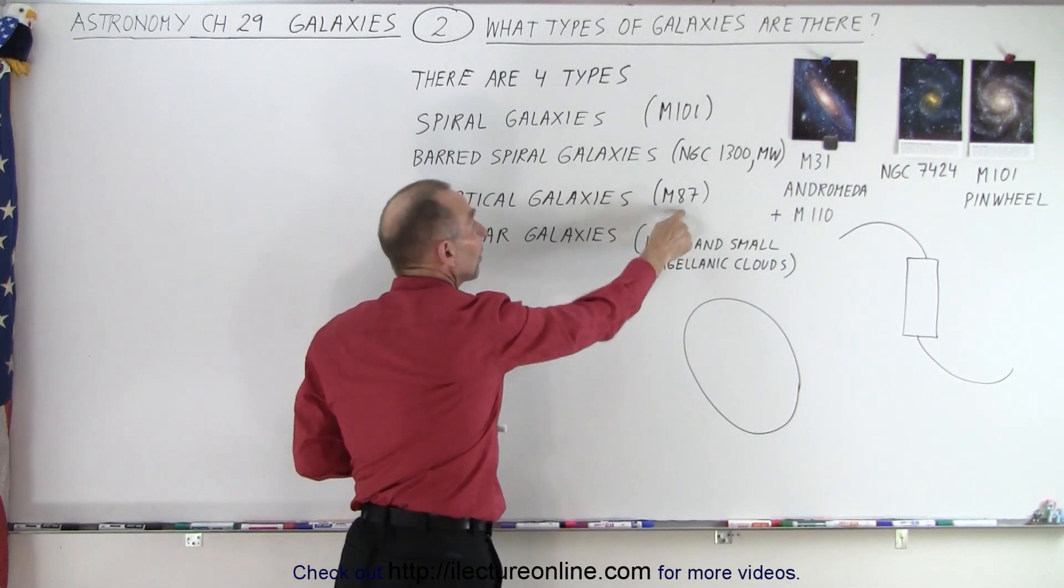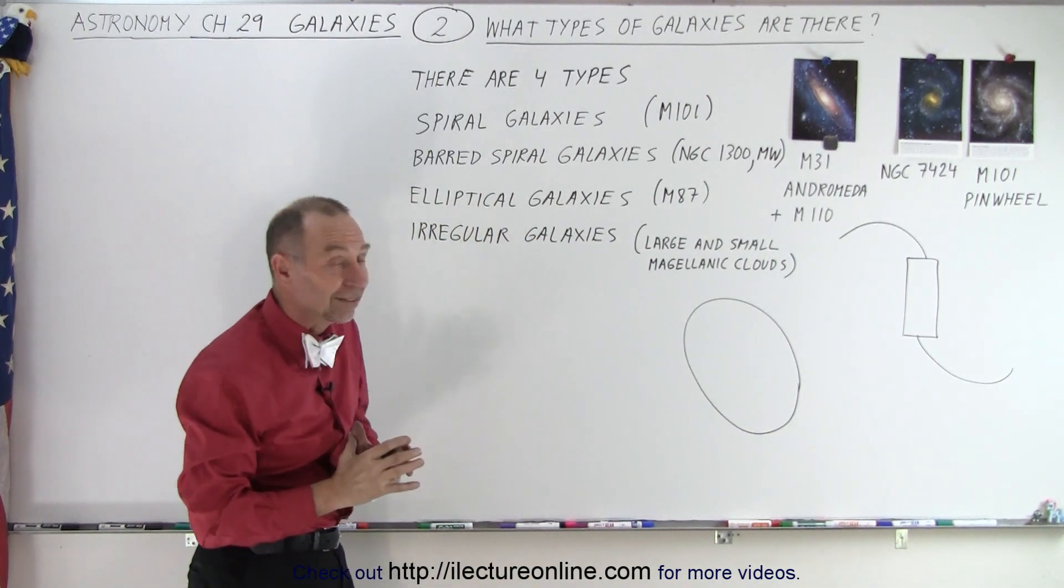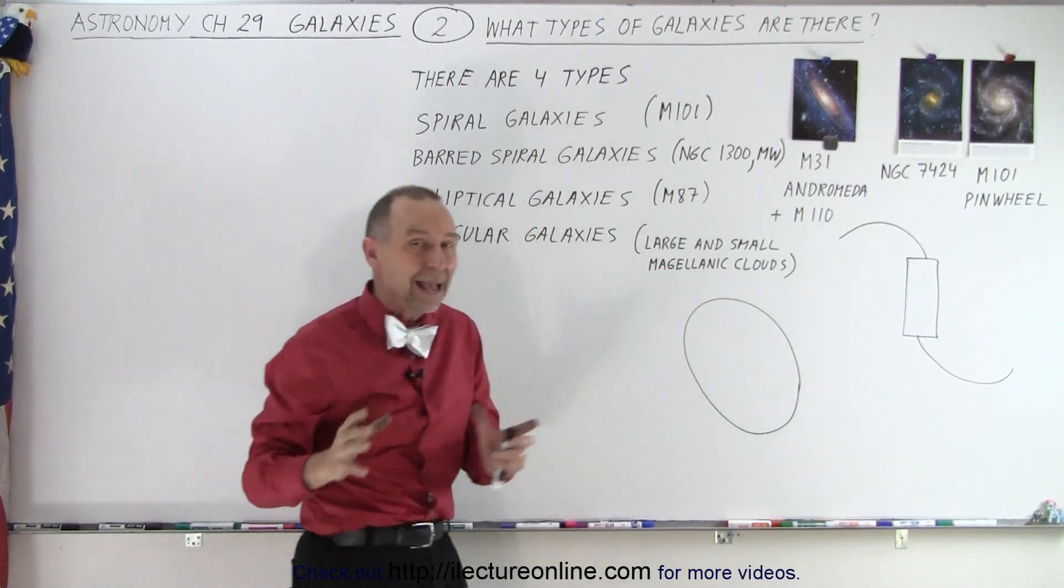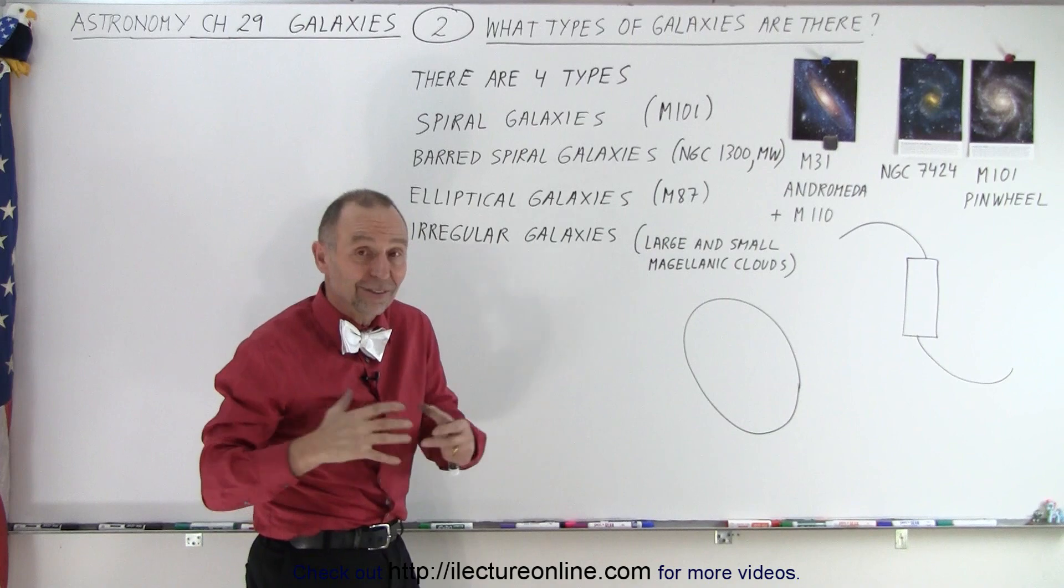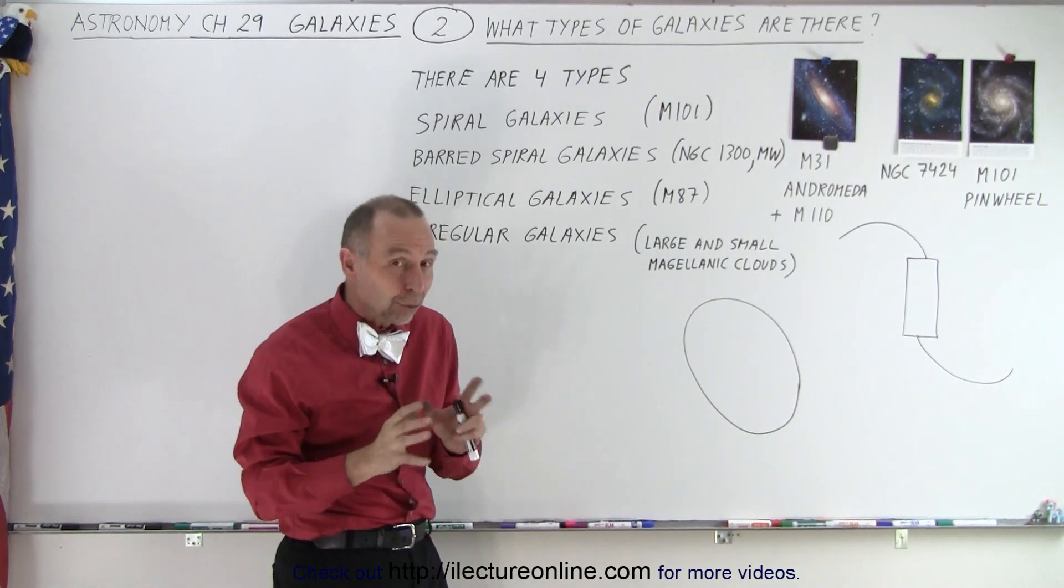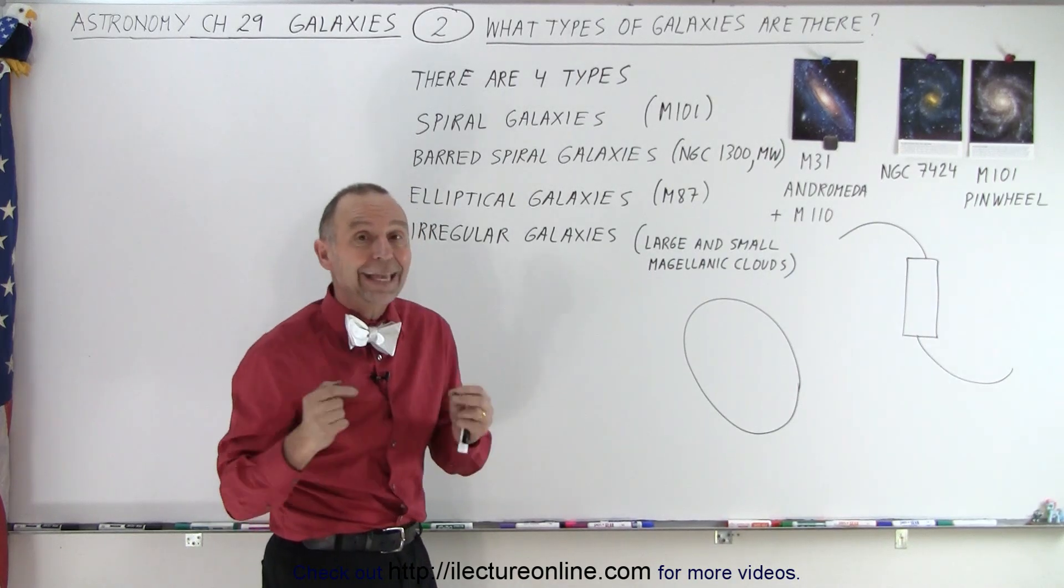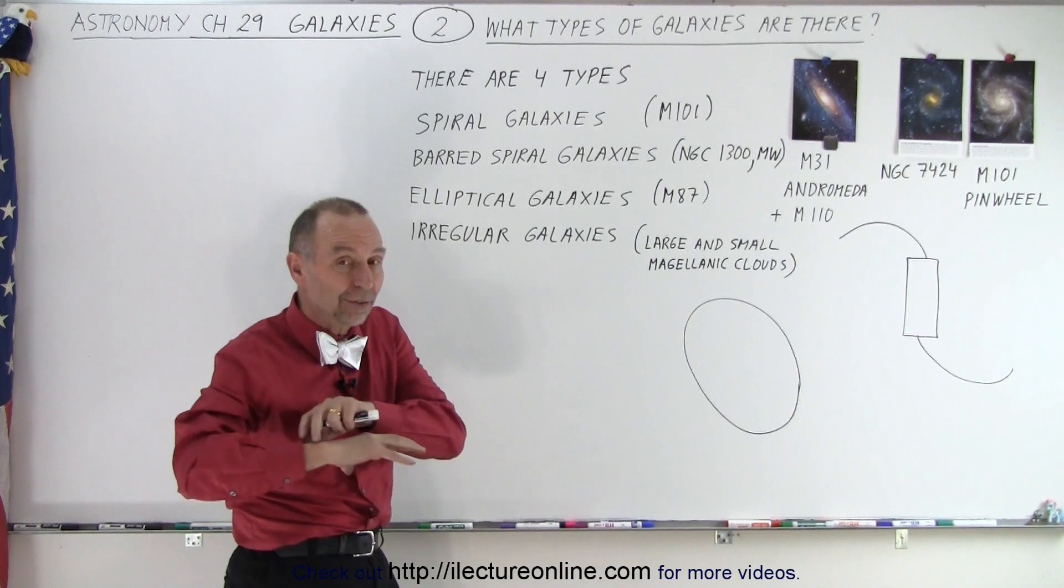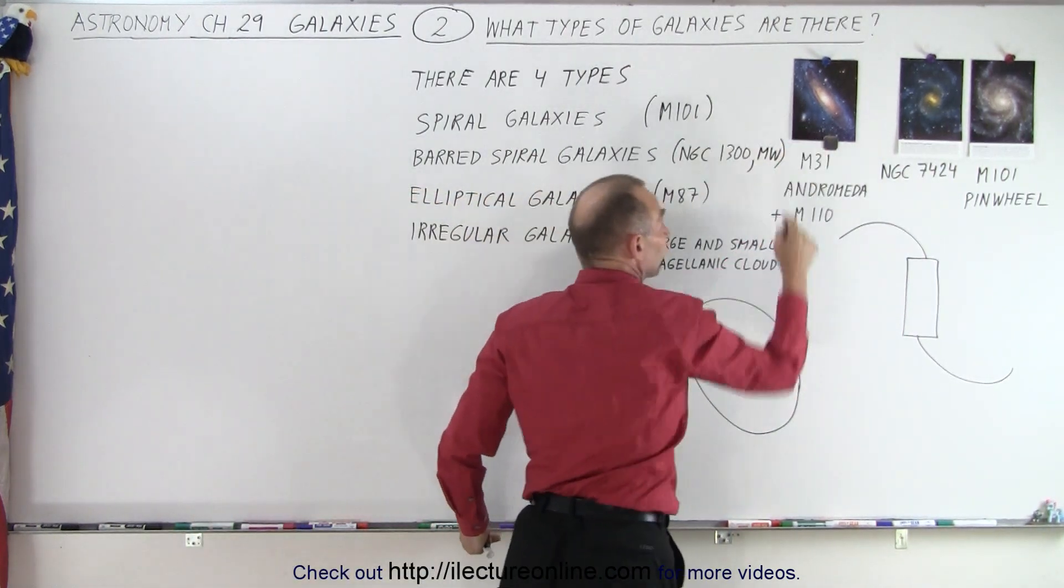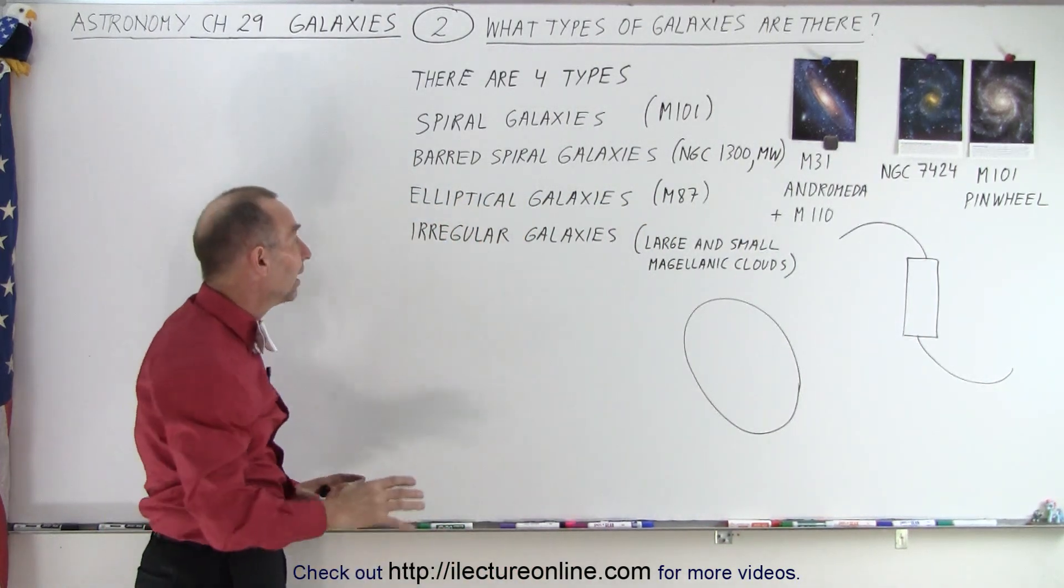But there are some very big elliptical galaxies. In fact, M87 is an example of one of those enormous elliptical galaxies. That galaxy, M87, has about 40 times as many stars as our Milky Way galaxy—essentially 40 times as big. Our Milky Way galaxy has about 250 billion stars; M87 has about 10 trillion stars in it. So we have some enormously large elliptical galaxies as well as very small elliptical galaxies.